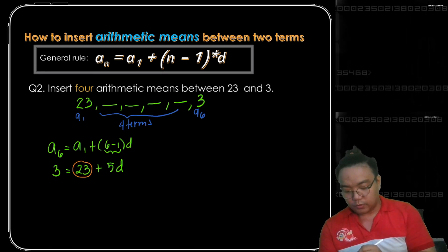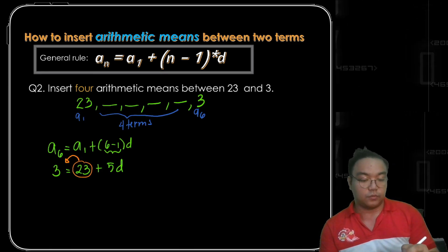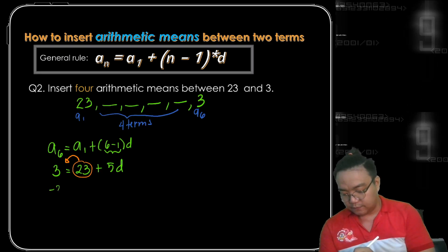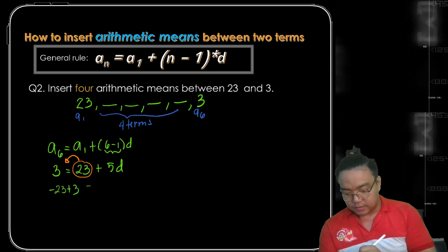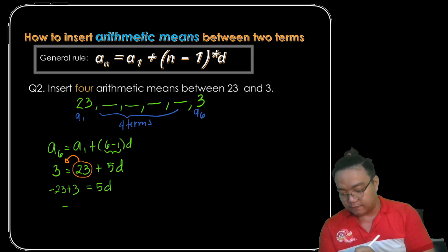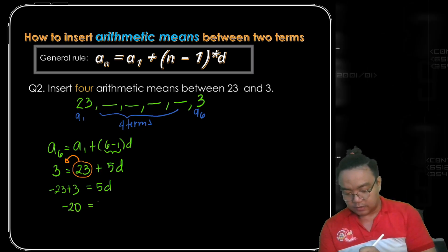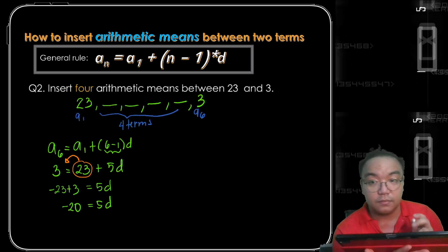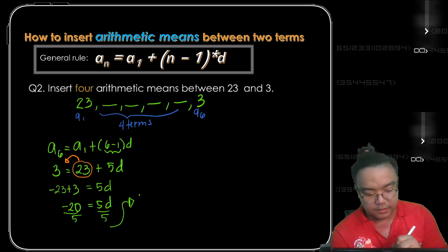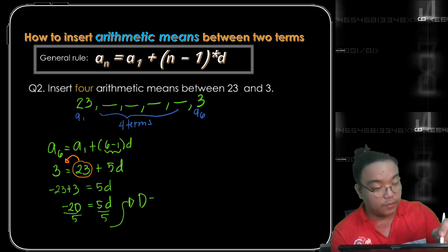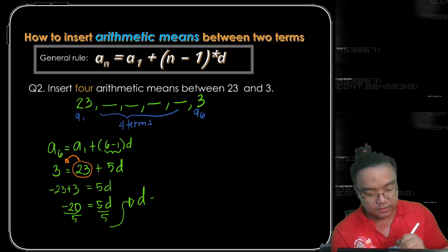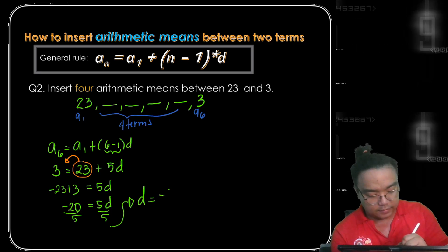Transposing 23 to the left side, or subtracting 23 from both sides, we get negative 23 plus 3 is equal to 5d. Simplifying, negative 20 is equal to 5d. Dividing both sides by 5, our common difference is negative 4.